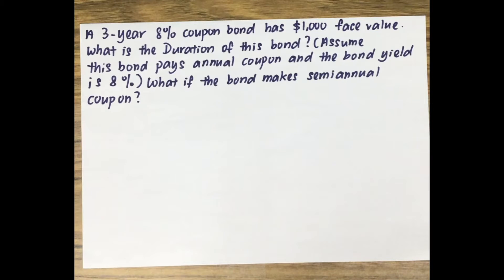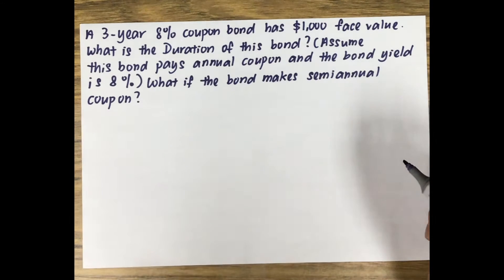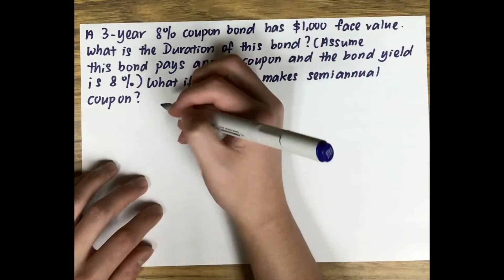Here's the question: a three-year, 8% coupon bond has a face value of $1,000. What is the duration of this bond? Assume the bond pays annual coupons and the yield to maturity is 8%. We'll also look at what happens if the bond makes semi-annual coupon payments. We'll start with the annual bond.